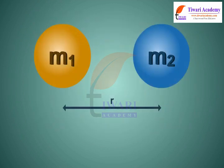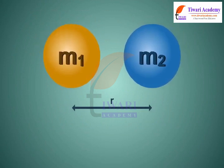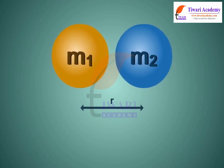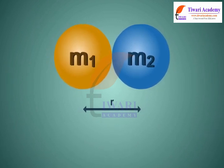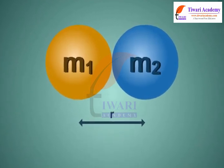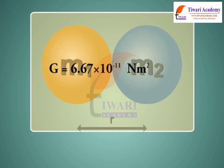The gravitational constant G is equal to the force of gravitation which exists between two bodies of unit masses kept at a unit distance from each other. The value of the universal gravitational constant is G = 6.67 × 10⁻¹¹ Nm²/kg².